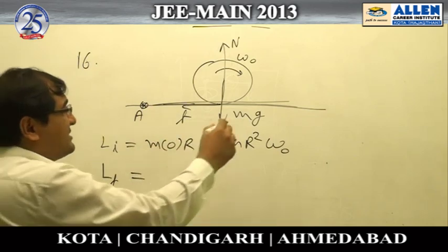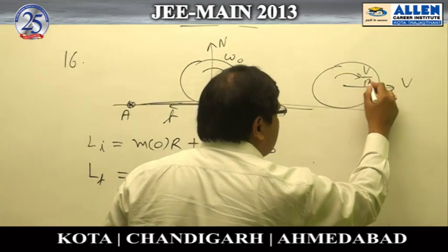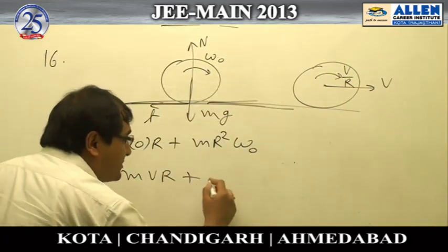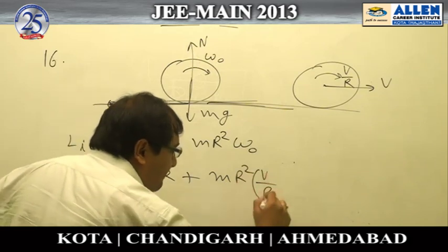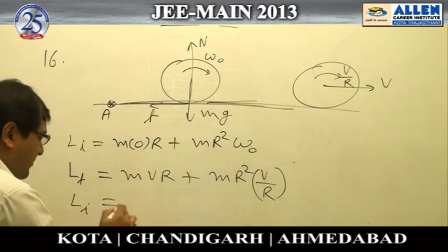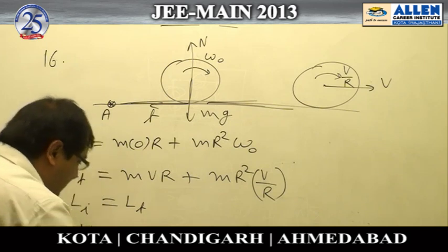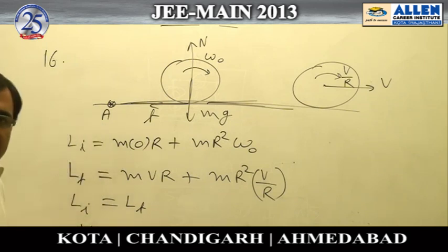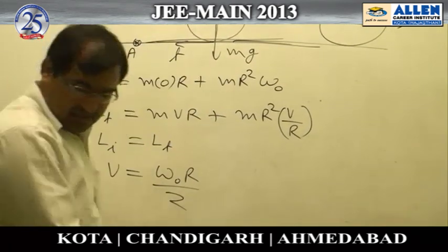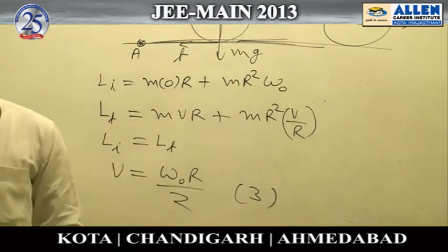Net torque about point A is zero, so angular momentum is conserved. The final angular momentum when pure rolling begins with velocity V and angular velocity V/R is mvR + mr²·(V/R). Equating initial and final angular momentum, it is easy to calculate that the final velocity is ω₀R/2, making option 3 the correct answer.